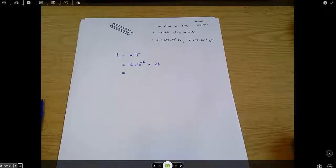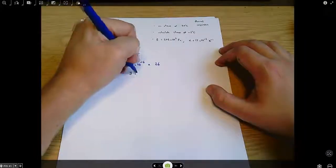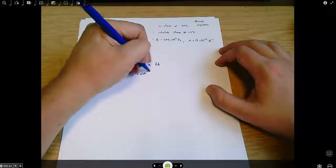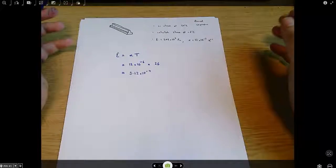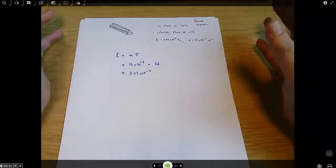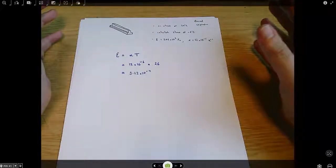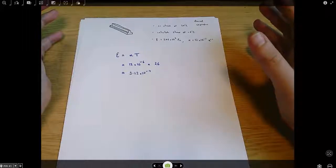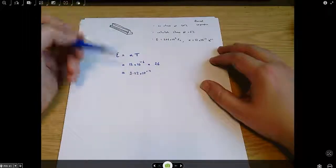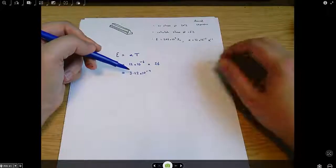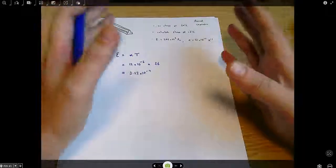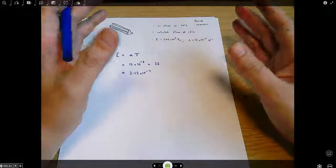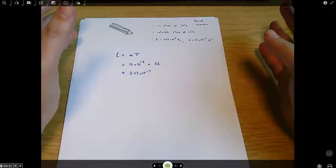So 26 times 12 times 10 to the minus 6, 3.12 times 10 to the minus 4 and it's a strain so it has no units. That is how much the rail contracts if it's completely free to move but in this case we're told that all contraction is prevented so that's the amount of strain that's prevented. So that's the same as if we let it contract all the way it wanted to and then stretched it back out to its original length.